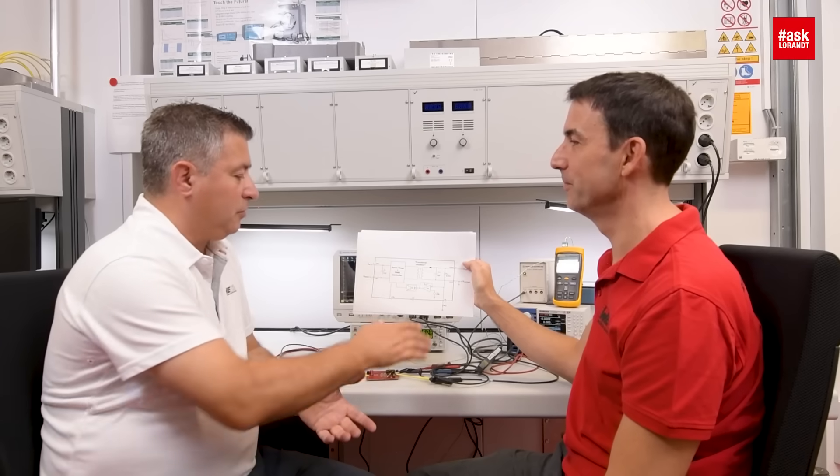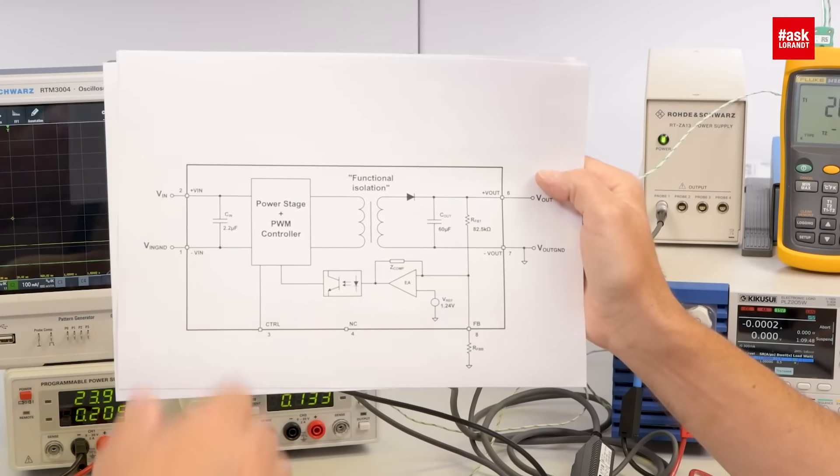And the output voltage is adjusted by only one external resistor here. Okay so only one resistor I can set up the output voltage. Yes. Alright. And if you need a power module with an output voltage that is not regulated, we've got also another product series for this. Without the feedback? Yes. Alright.